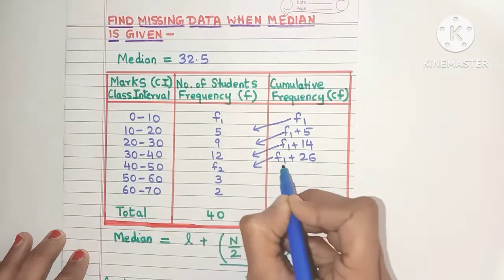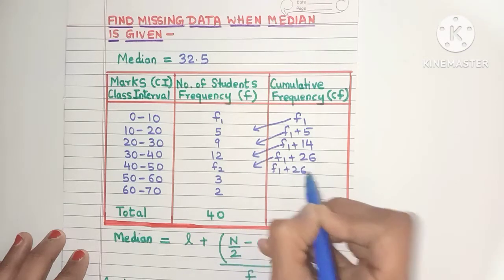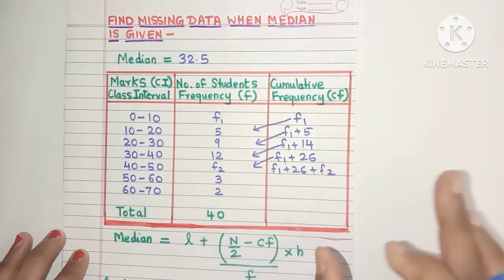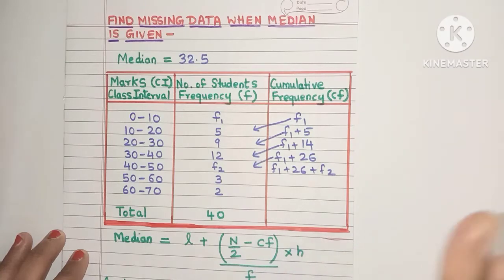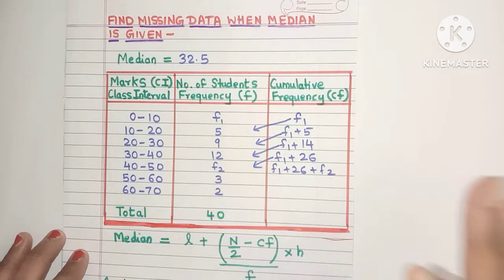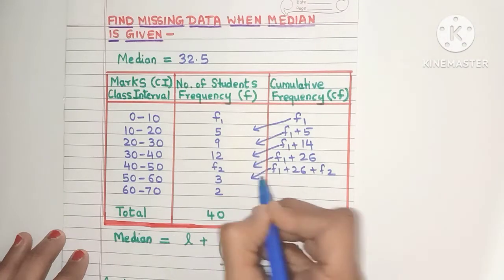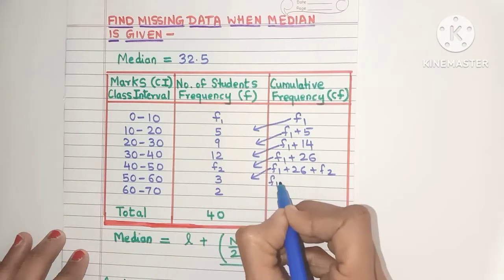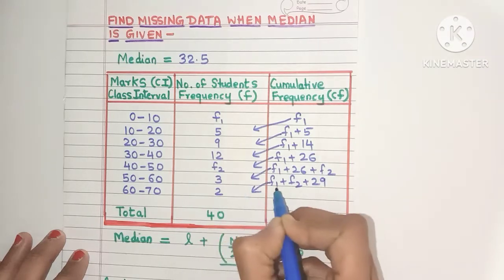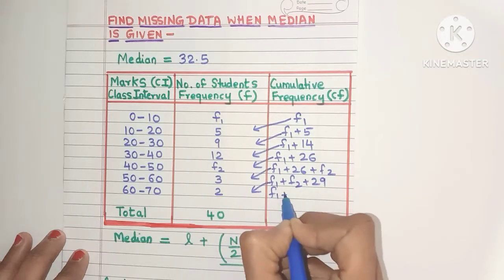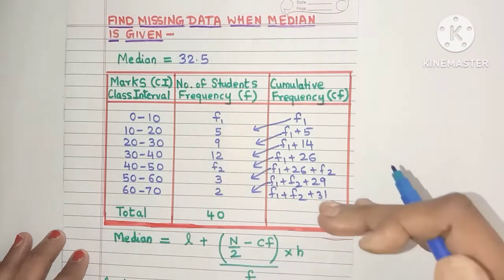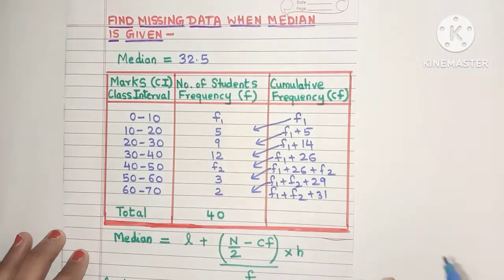For the next class interval we get f1 plus 26 plus f2. Because f1 and f2 are two different variables we cannot add them further, so we keep it as f1 plus f2 plus 26. Continuing, we get f1 plus f2 plus 29, and then f1 plus f2 plus 31. That is how we get all the cumulative frequency entries.